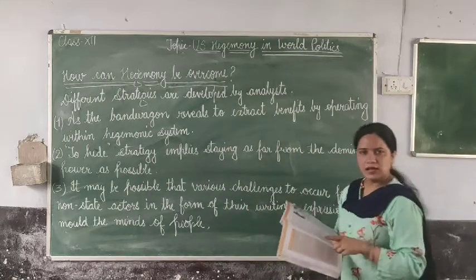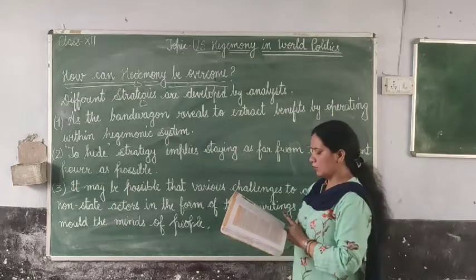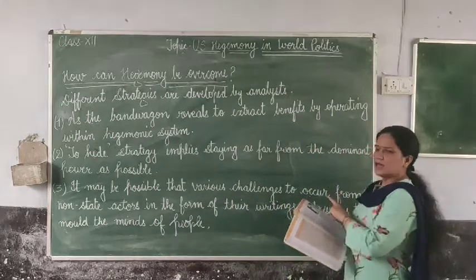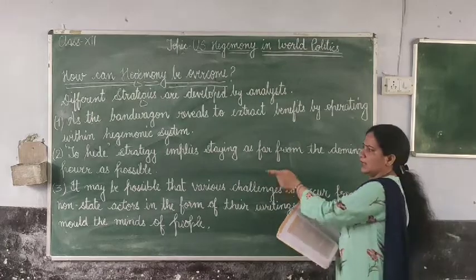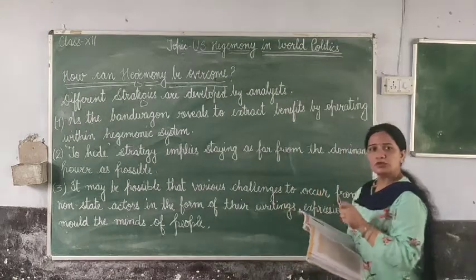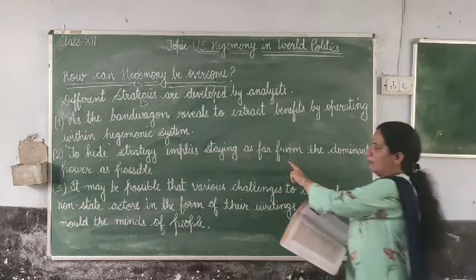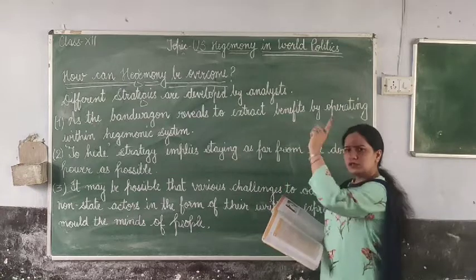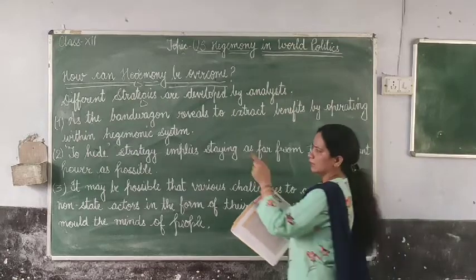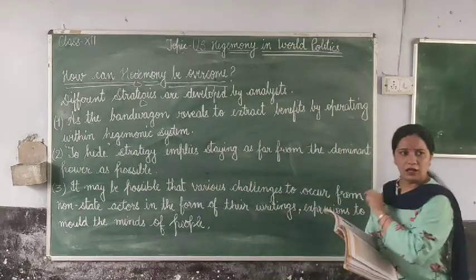For example, the NPT — Nuclear Non-Proliferation Treaty — was signed on 1st April 1968, but India didn't sign it. In 1998, India conducted nuclear tests without telling anyone. America was monitoring the world through satellites, but India managed to hide its nuclear test in 1998.